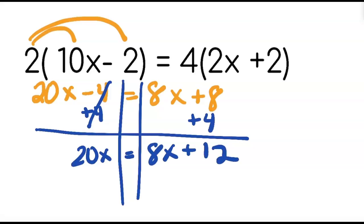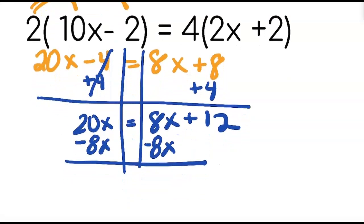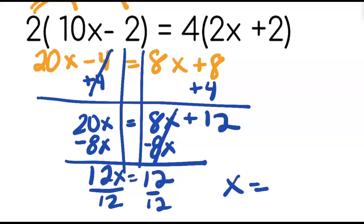Now I need to get rid of the 8x and move it to the other side. So I do the opposite. So since it is a positive 8x, I'm going to subtract 8x. 20 minus 8 is going to give us 12x equals 12. Divide both sides by 12. x equals 1.